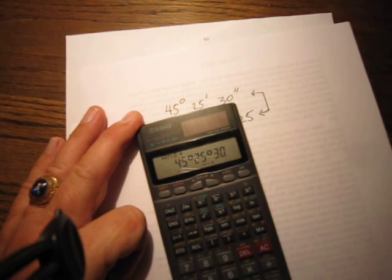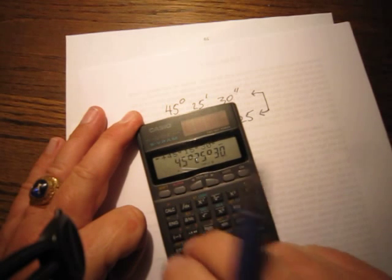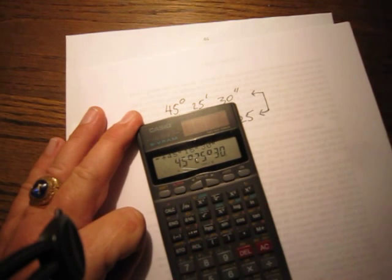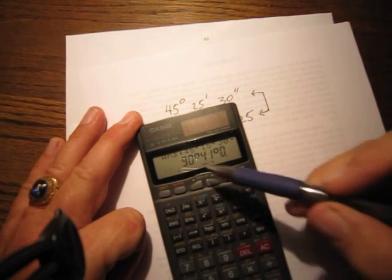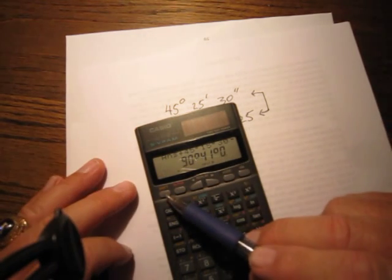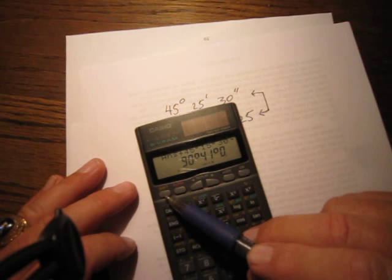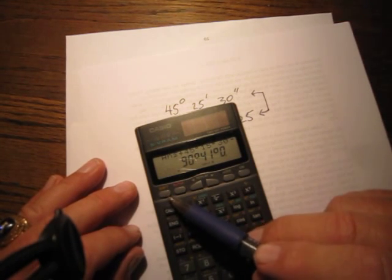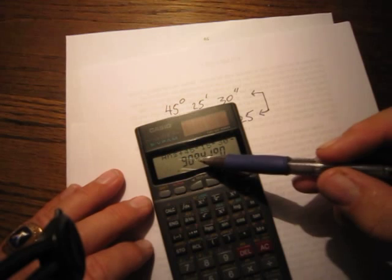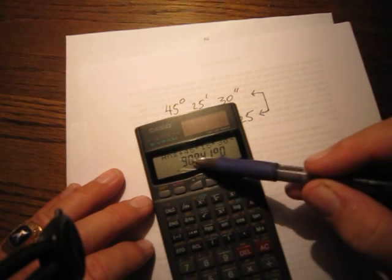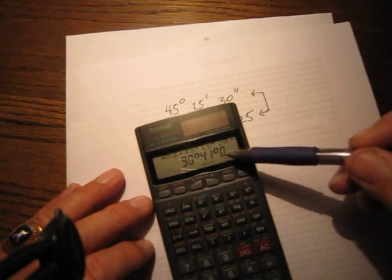See, this did not try to give it to you in decimal places. So I actually prefer this calculator to the one we were using earlier, because this keeps it in the standard format of degrees, minutes, and seconds. Now, we can add 45 degrees, 15 minutes, and 30 seconds up here.